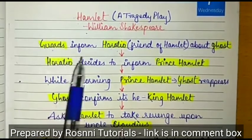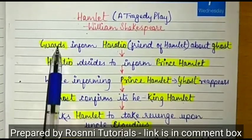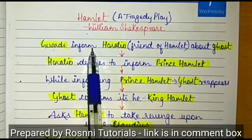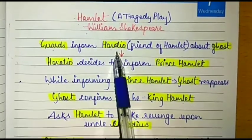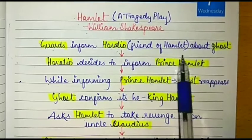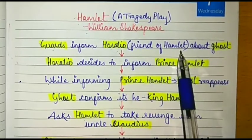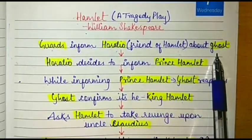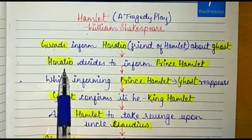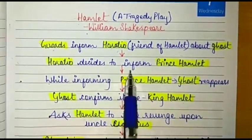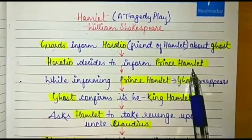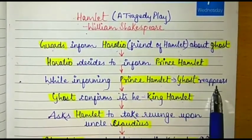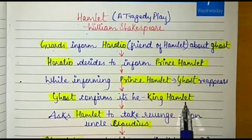At first, we find the guards of the castle of Denmark experiencing some weird occurrences around them in the castle. They informed Horatio about their entire experience. Horatio is a main character and the best friend of Hamlet. Horatio then decided to inform Prince Hamlet about the ghost.